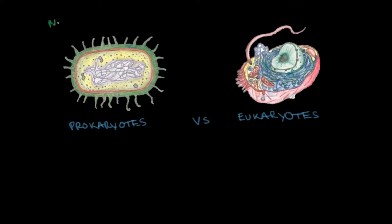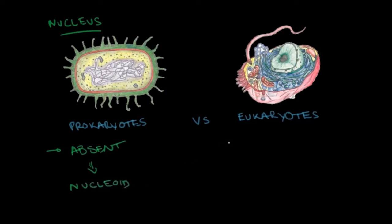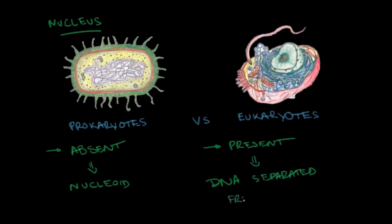In terms of the nucleus, prokaryotes do not have a defined nucleus — it's absent. They do have an area called a nucleoid, which is where DNA is located. In eukaryotes, you will see a very defined nucleus — it's present — and this is where the genetic material is separated from the cytoplasm by a membrane. DNA is separated from the cytoplasm, which is very important. The green area I'm showing here represents the nucleus in eukaryotes.